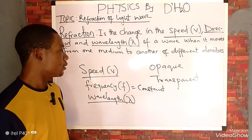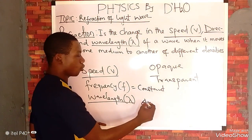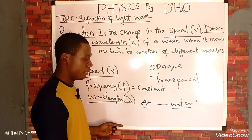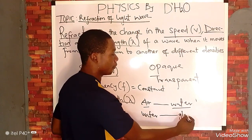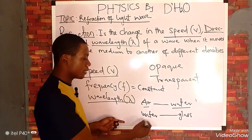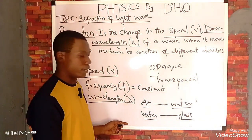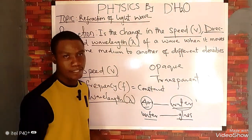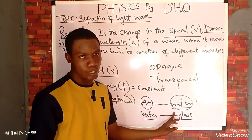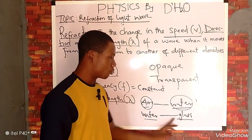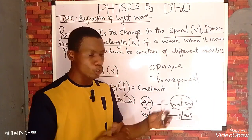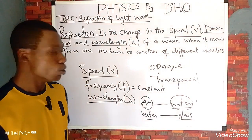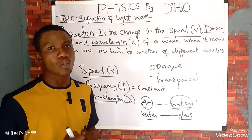If light moves from air to water, refraction is bound to occur because the density of air and the density of water are not the same. Refraction only occurs when waves move from one medium to another of different density — for example, air to water, water to air, water to glass, or glass to water. We are going to be looking at the refraction of light on a triangular glass prism.